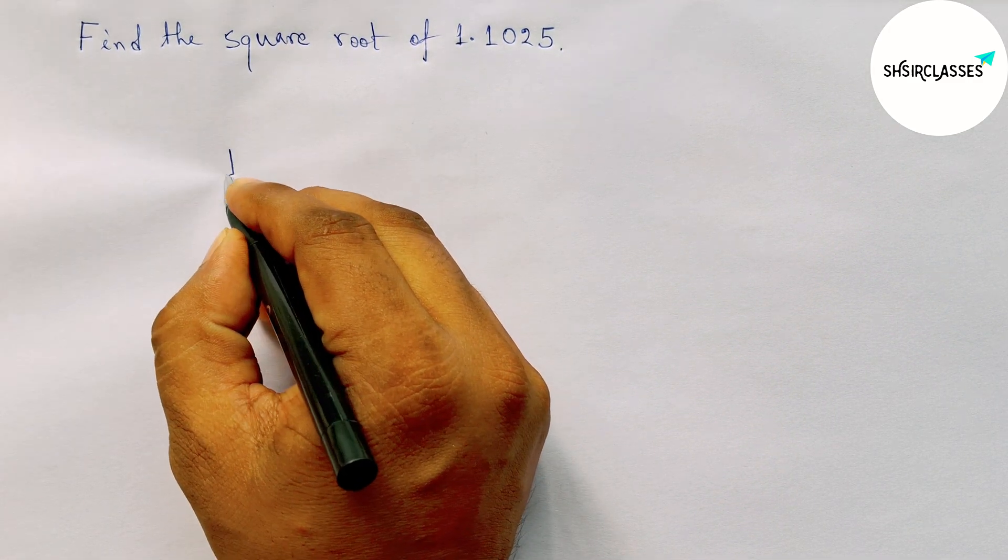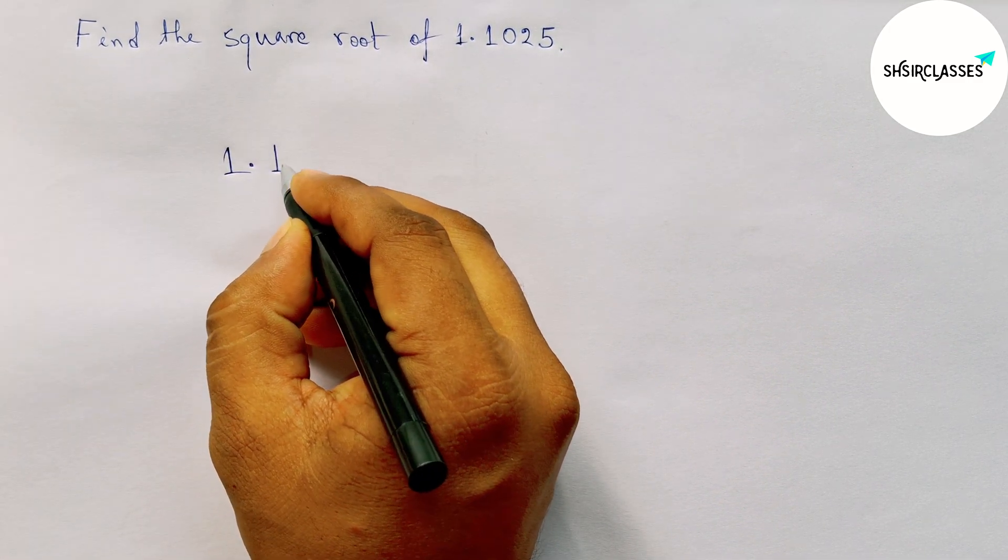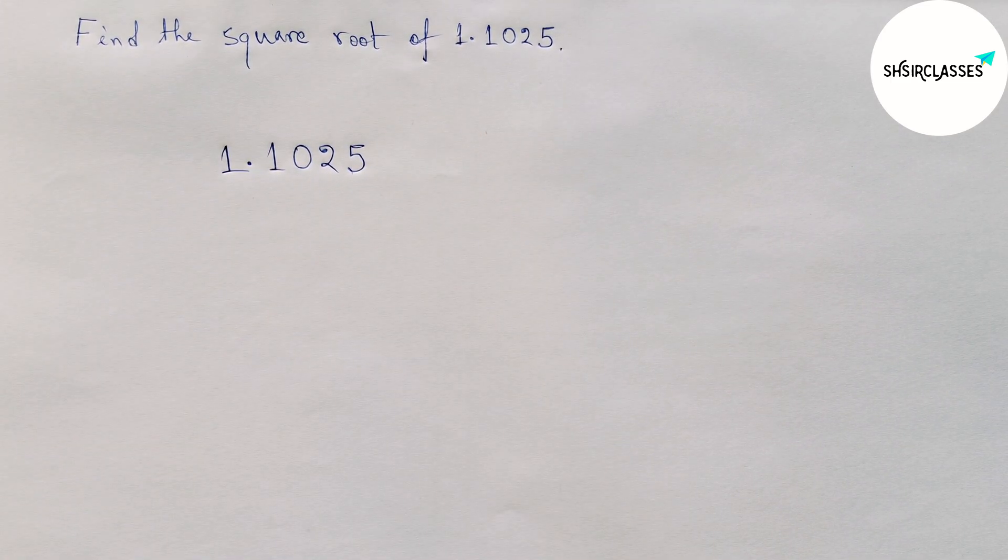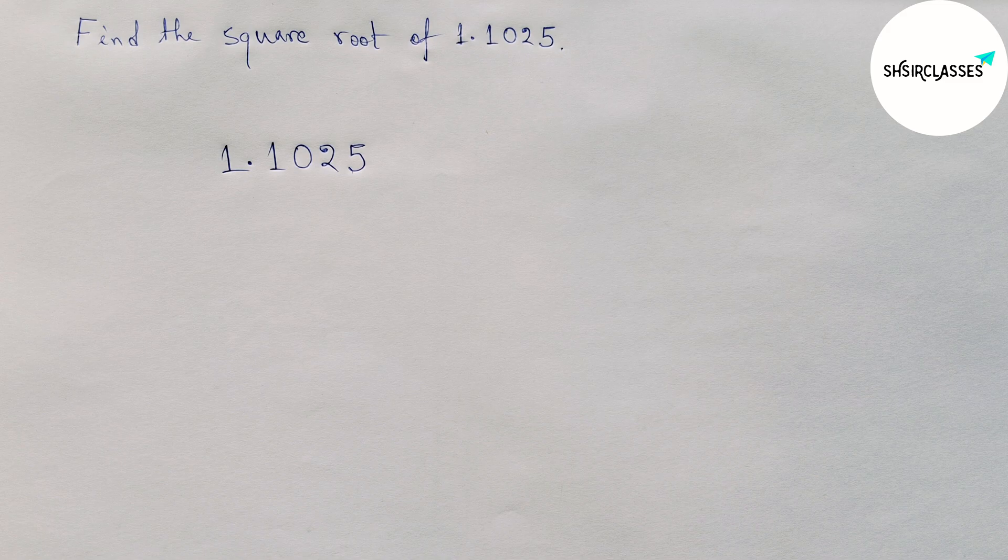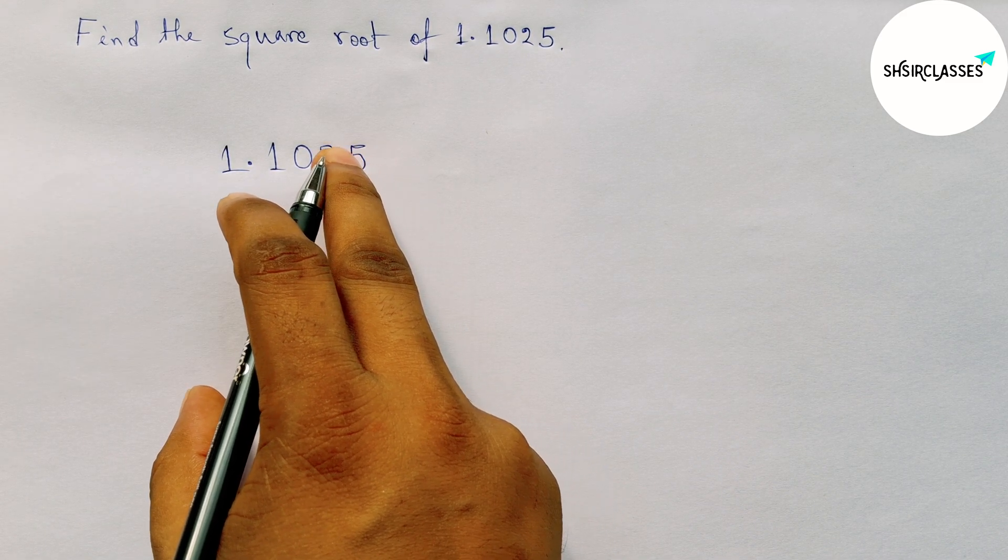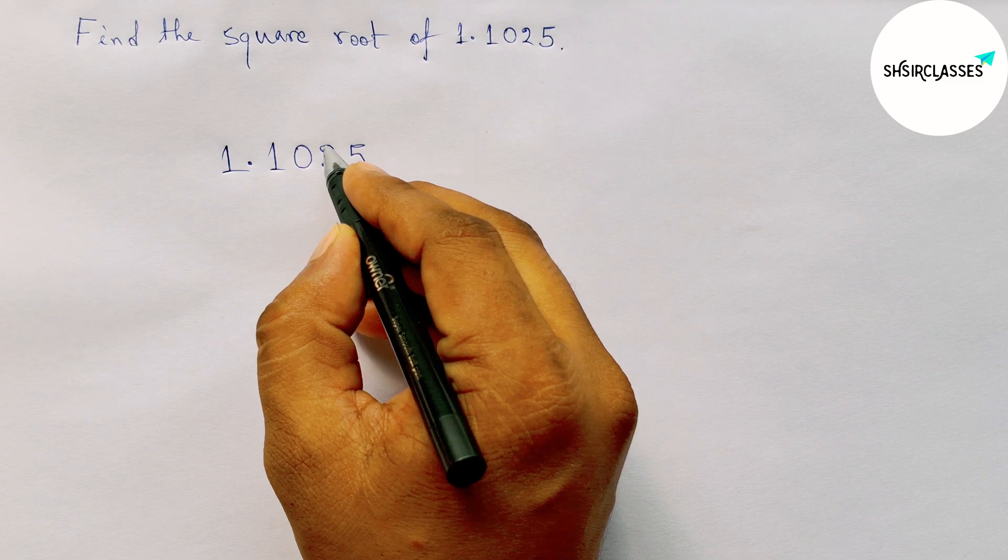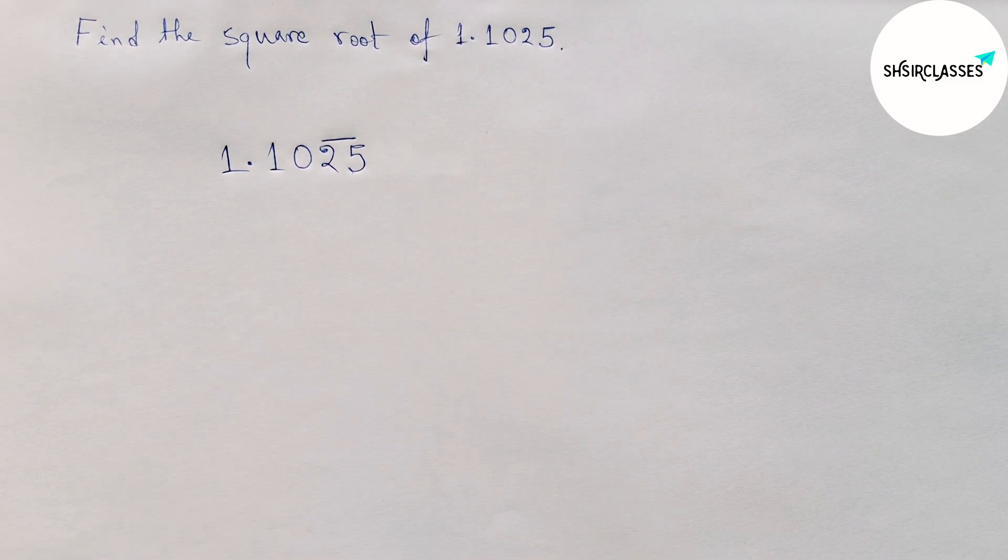One decimal point 1025. Now making pair of numbers from right to left, taking two numbers as a pair. Drawing a bar on two numbers. By this way we got here two pairs of numbers and drawing division line on both sides.